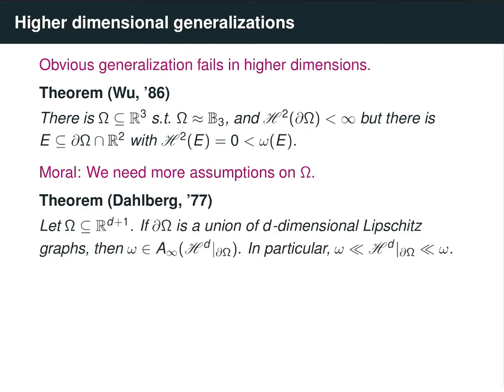Dahlberg in 1977 showed that if you have a Lipschitz domain — that is, if the boundary of a domain is a union of d-dimensional Lipschitz graphs — then harmonic measure is mutually absolutely continuous with respect to surface measure. Moreover, it is an A-infinity weight, which is a more quantitative version of absolute continuity. There are many problems about understanding the quantitative absolute continuity properties of harmonic measure, but those won't be discussed in detail here.